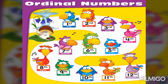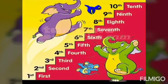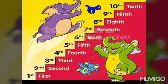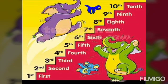Another example of ordinal numbers: on the top the first number is first, followed by second, third, fourth, fifth, sixth, seventh, eighth, ninth, tenth, eleventh, twelfth. Another example shows ordinal numbers as steps — the lowest step is first, followed by second, third, fourth, fifth, sixth, seventh, eighth, ninth, and the last step is tenth.